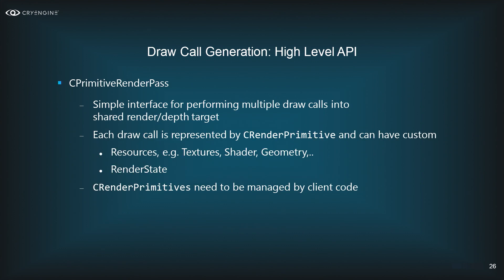The primitive render pass is the next more complex object. It's similar to the full screen render pass except it renders multiple draw calls into the same target. Each draw call is a CRenderPrimitive object that you set up with functions for resources, textures, shader, geometry, and render state, then pass to the primitive render pass. The pass does not take ownership of the primitive — you as a client are responsible for keeping primitives alive until rendering is complete.